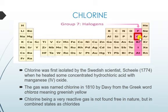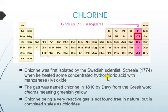Chlorine is the most important element of all the halogens. Chlorine is the second element after fluorine. Chlorine was first isolated by the Swedish scientist Scheele in the year 1774, when he heated concentrated hydrochloric acid with manganese dioxide. The gas was named chlorine in the year 1810 by Davy, from the Greek word 'chloros' meaning greenish yellow.